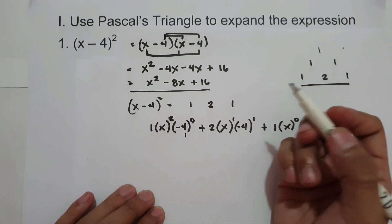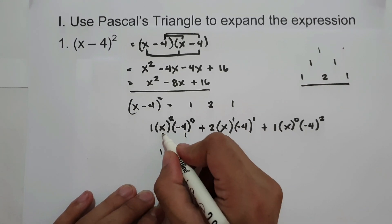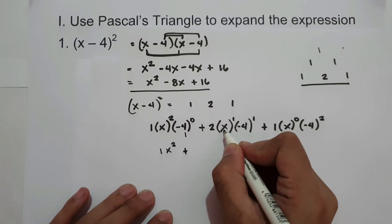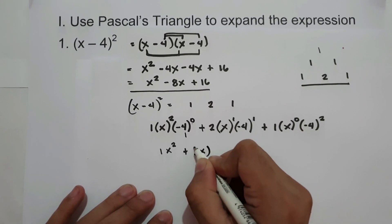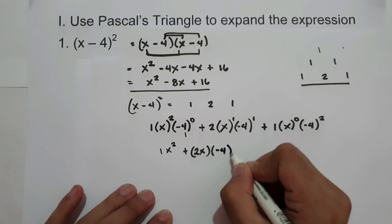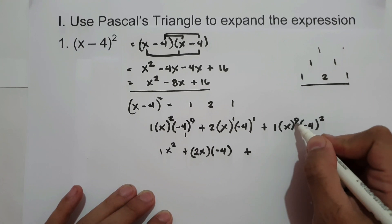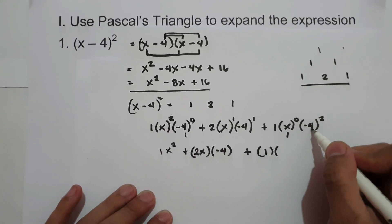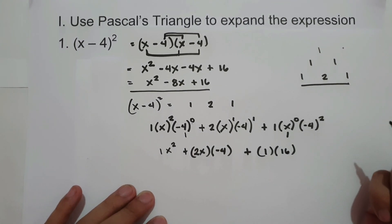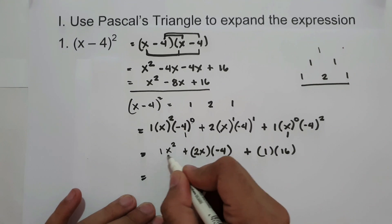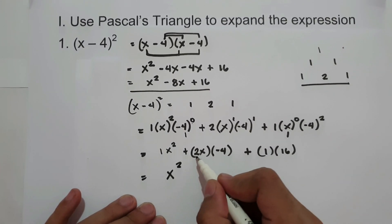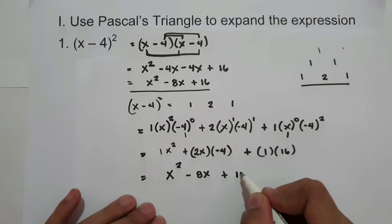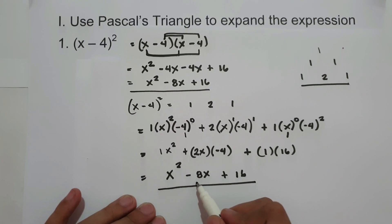Negative 4 raised to 0 is 1, and 1 times 1 is 1, so x squared. Then plus x raised to 1 is x, times 2 is 2x, and negative 4 raised to 1 is negative 4. Plus x raised to 0 is 1 — any number raised to 0 is 1 — times negative 4 raised to 2 is 16. So to simplify: we have x squared, then 2x times negative 4 is negative 8x, plus 1 times 16 is 16. Our final answer is x squared minus 8x plus 16.